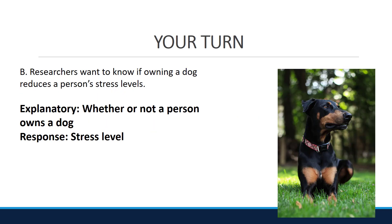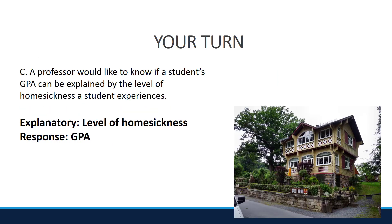Researchers want to know if owning a dog reduces a person's stress level. The explanatory here is whether or not a person owns a dog, and the response is stress level. A professor would like to know if a student's GPA can be explained by the level of homesickness a student experiences. Here the explanatory is level of homesickness and the response is GPA.